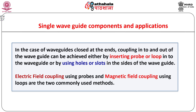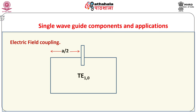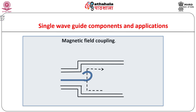Electric field coupling using probes and magnetic field coupling using loops are the two commonly used methods. The centre wire of a coaxial cable extended into the waveguide can serve the purpose of a probe used for electric field coupling. In one of the earlier modules on waveguides we have studied such methods of excitation of different modes in the waveguide. The end of coaxial line bent in the form of a loop when inserted into the waveguide serves the purpose of magnetic field coupling.